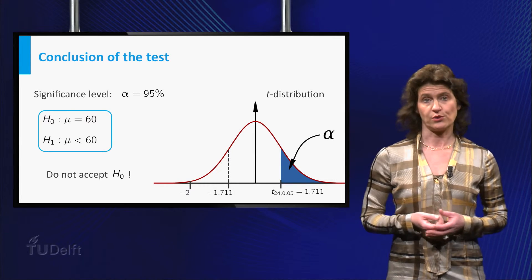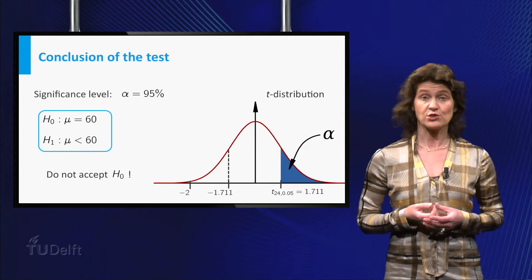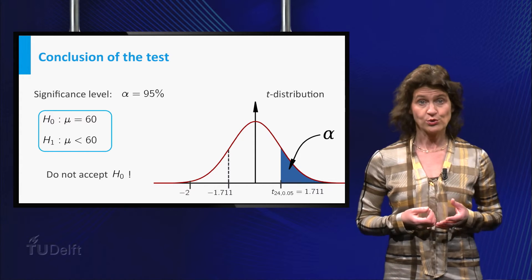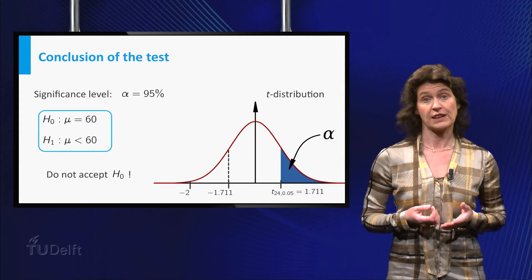so you can reject the null hypothesis that the school meets the national norm. The data seem to provide enough evidence to conclude that the school performs worse than other schools.